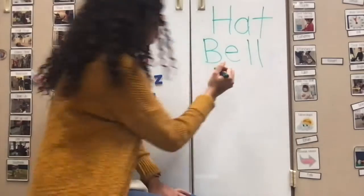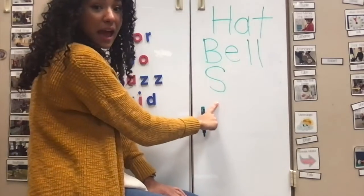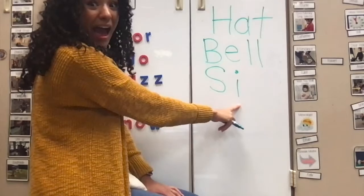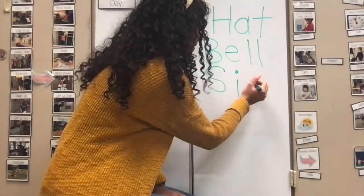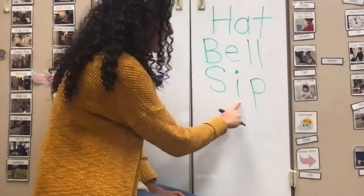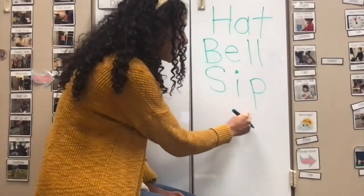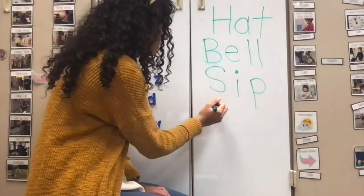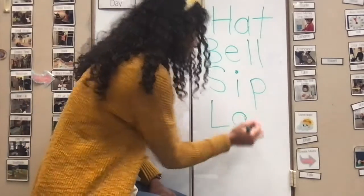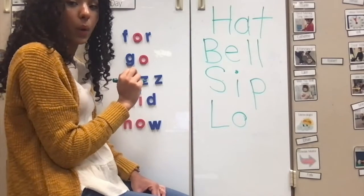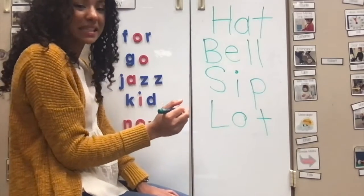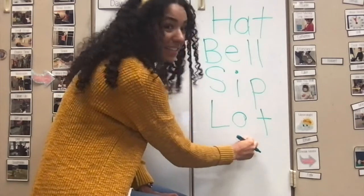Here's the next one. What letter is that? S. What letter is this? I. What sound does it make? I-I-I. What letter is this? P. What sound does it make? P-P-P. S-I-P. Sip. All right, now to the next one. What letter is this? L. What sound does it make? L-L-L. What letter is this? O. What sound does it make? O-O-O. What letter is this? T. What sound does it make? T-T-T. L-O-T. Lot.